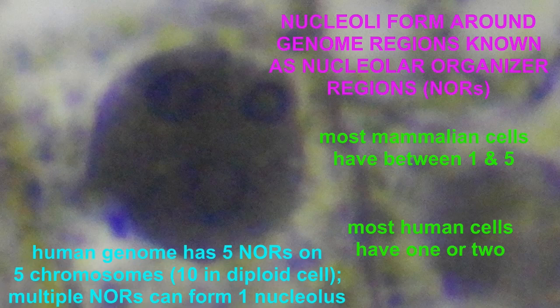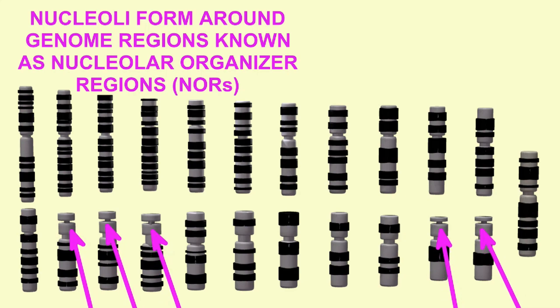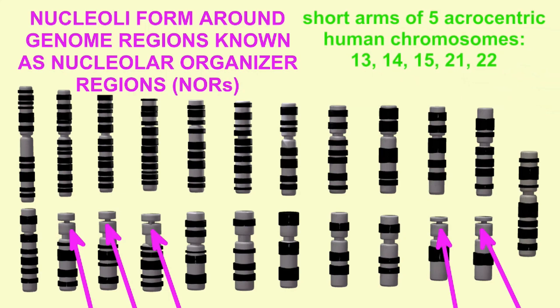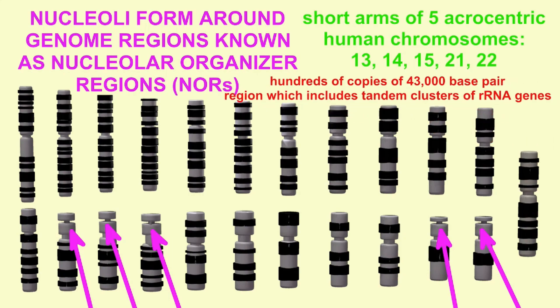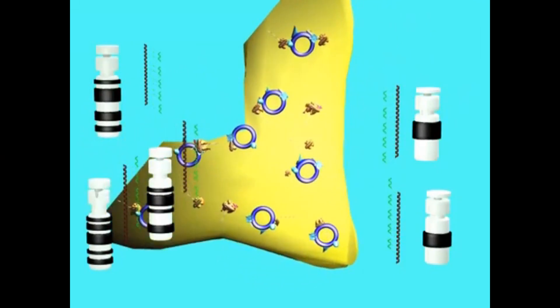There are five human chromosomes — chromosomes 13, 14, 15, 21, and 22 — which share the same structure. They are acrocentric, and on their short arms they possess long sets of genes which encode the RNA segments of ribosomes. They have 43,000 base pair regions and hundreds of copies of this sized region containing these genes. These represent the parts of the chromosome which can start the formation of a nucleolus.